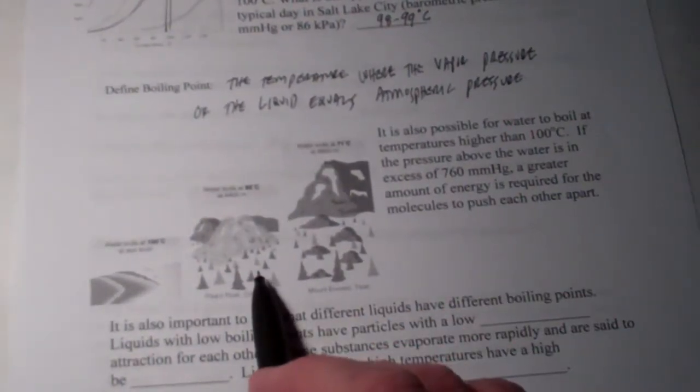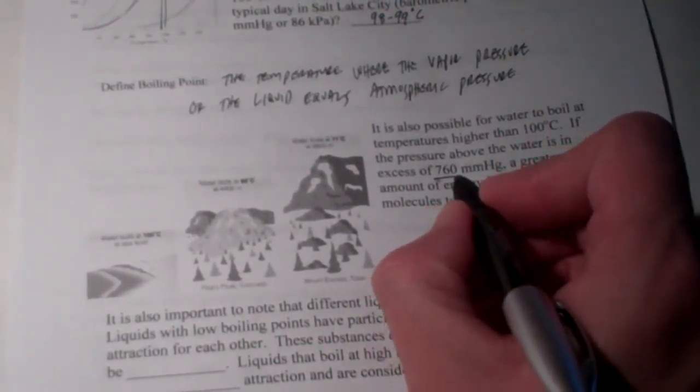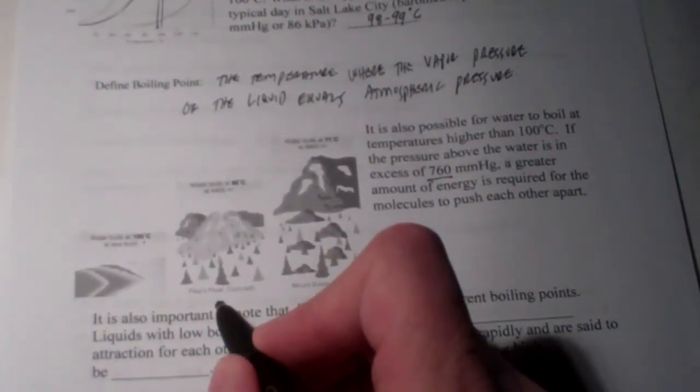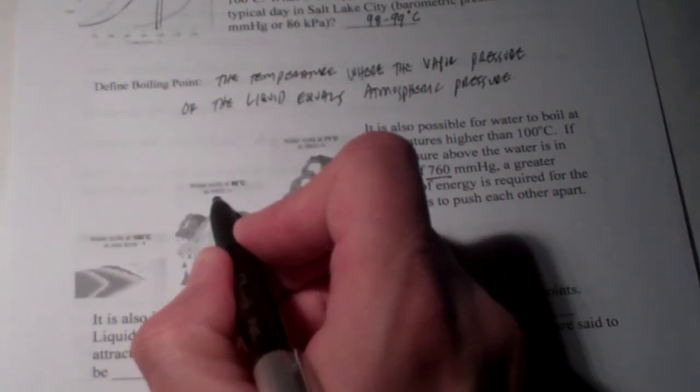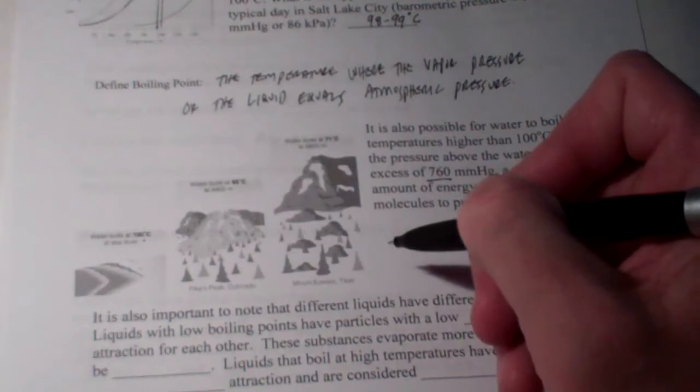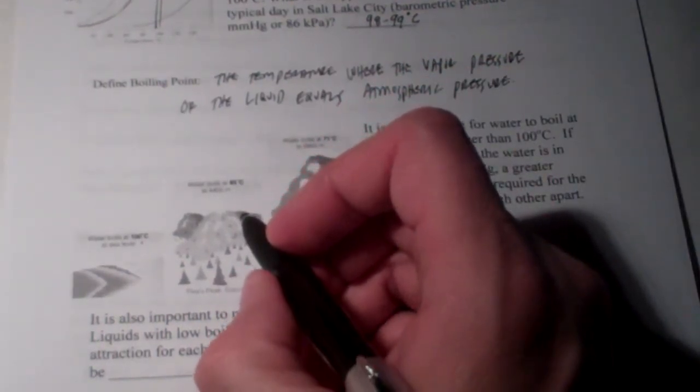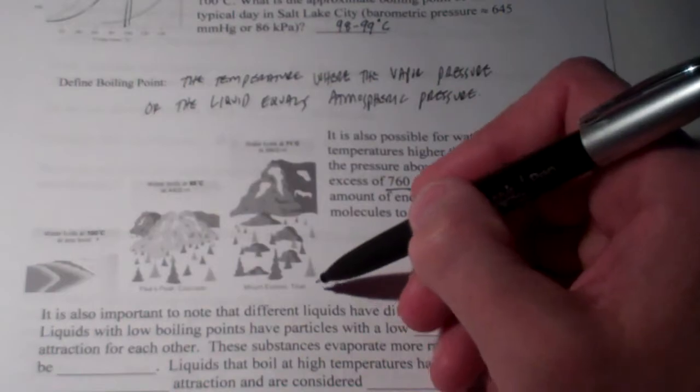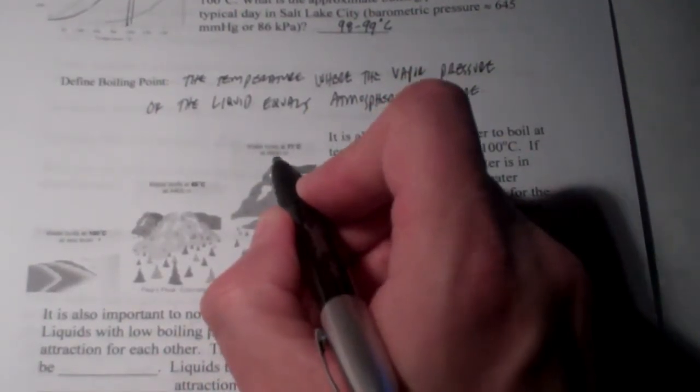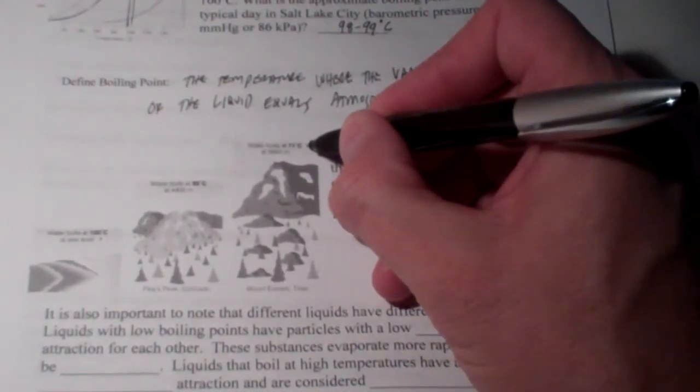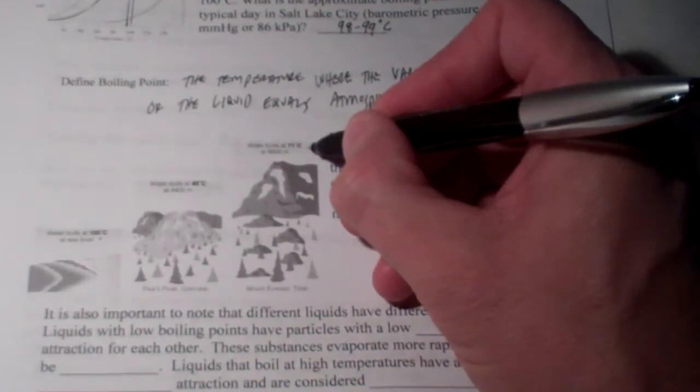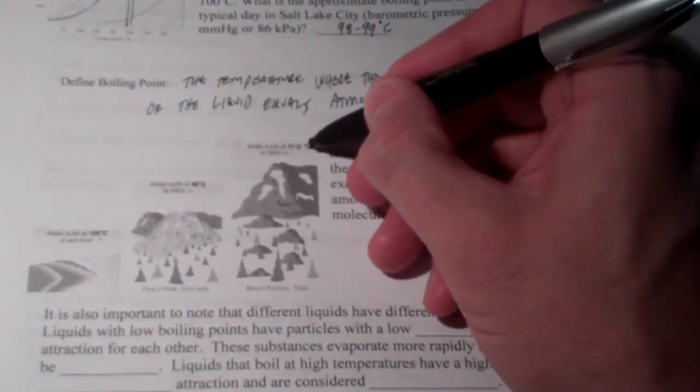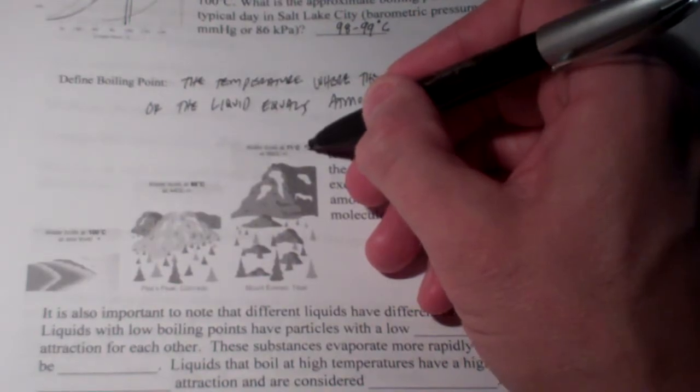This neat little picture here shows at sea level, where the atmospheric pressure on a typical day is about 760 millimeters of mercury, water boils at about 100 degrees Celsius. On top of Pikes Peak in Colorado, where the elevation is about 4,400 meters above sea level, the atmospheric pressure is quite a bit lower. So, it's easier for those gas bubbles to form. So, the boiling point is only 85 degrees Celsius. And on top of Mount Everest in Tibet, where we're about 8,800 meters above sea level, the atmospheric pressure is so low, it does not require very much energy at all for those liquid particles to turn into gas particles, to push away from each other, and to begin to boil. On top of Mount Everest, the boiling point on a typical day is about 71 degrees Celsius.